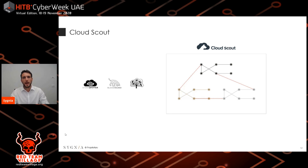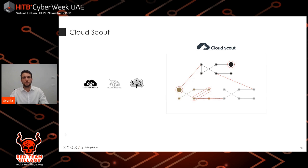For example, we have users in our on-premise Active Directory which are synced to our Azure Active Directory. Therefore, we can create a relation between a StormSpotter user and a Bloodhound user based on their user security identifier. Beyond these preview relations, we enrich the data of different nodes and created more complex relations that show us complex and non-trivial attack paths which we couldn't see in the past.